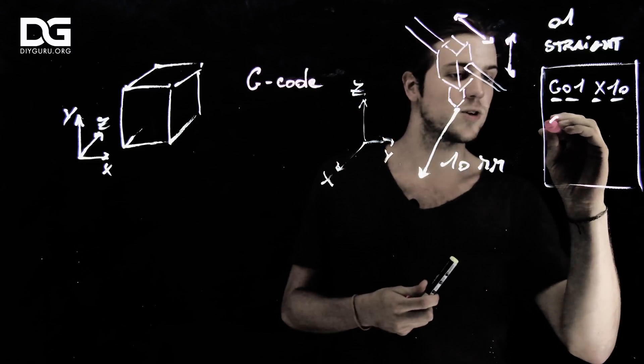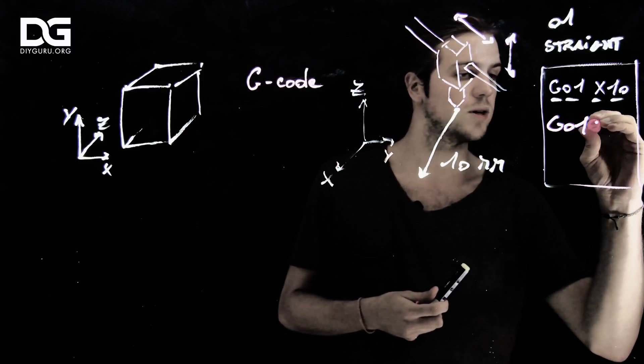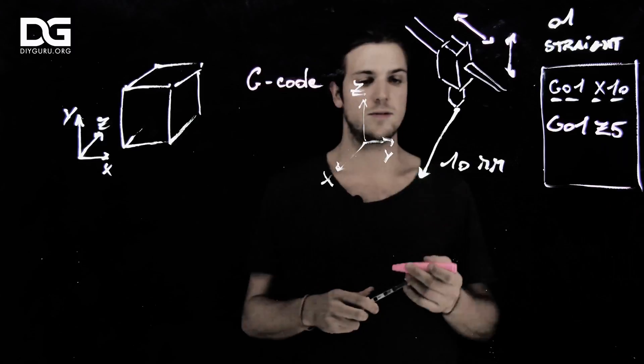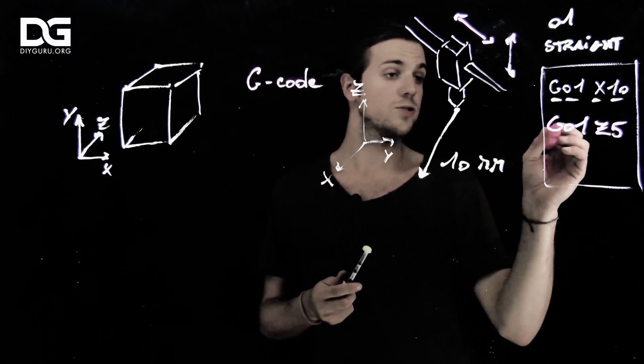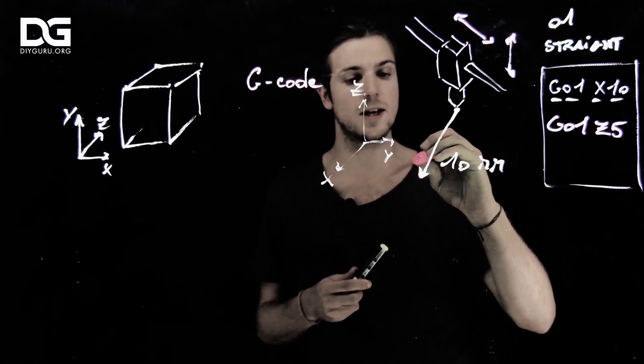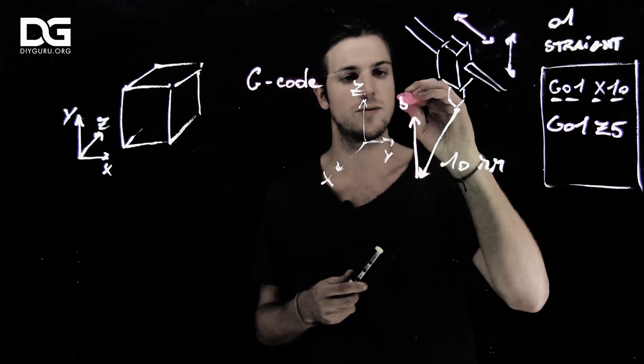So now you guessed it. Let's try something else, like this G01Z5. So this time, what is it going to do? Well, G01 is still straight, along the Z axis from 5 units up. 5 mm.